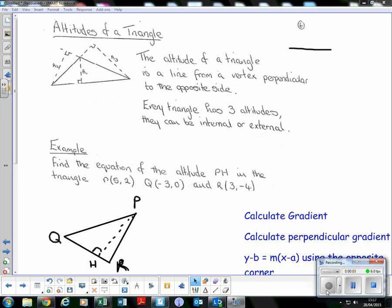SQA Higher Math, straight line topic, lesson number eight: the altitude of a triangle. The altitude of a triangle is a line from a vertex perpendicular to the opposite side. Remember, vertex means corner.